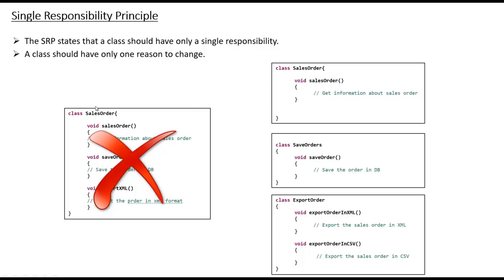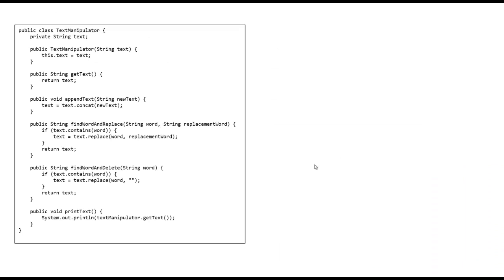This makes the SalesOrder class follow the Single Responsibility Principle — this is the correct format. Now let's see another example. Suppose I have a TextManipulator class that takes a string as input and manipulates it. It has methods like getText, appendText, findWord and replaceText, findWord and deleteText, and printText. All these methods of the TextManipulator class are manipulating the given text — but if you see printText, it is not manipulating; it is printing. So the TextManipulator class should not have printText.